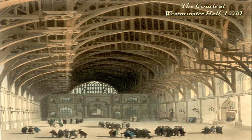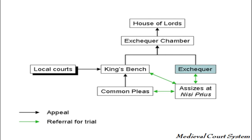Here again is the courts at Westminster Hall in 1750. By this point they had put up a screen to separate the courts from all the attorneys milling about on the other side. The King's Bench also acted as a Court of Appeals for the Exchequer of Pleas, the Court of Common Pleas, the Eyres, the Assizes, and the County Courts, though final appeal could always be made to Parliament — essentially to the House of Lords.